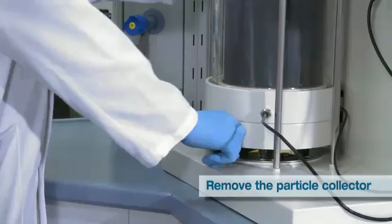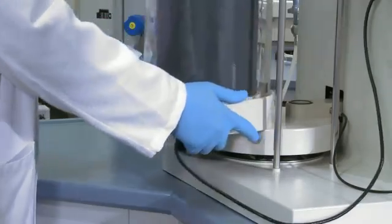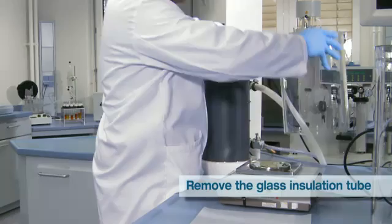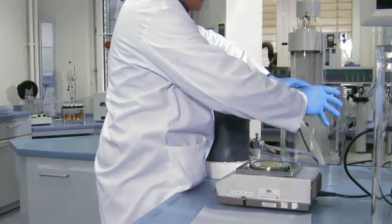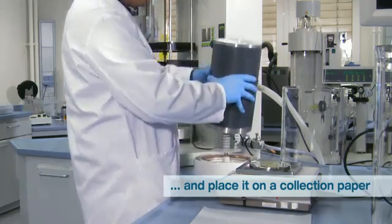To remove the particle collector, simply push the arm to the left and remove the insulation glass cylinder. Dismount the collection tube and place it on a piece of particle collection paper.